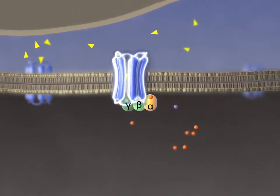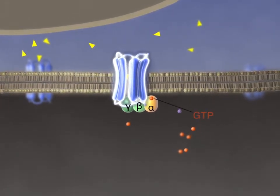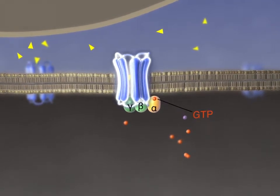GTP, which is much more abundant in the cytoplasm, will then bind to the G-protein alpha subunit.